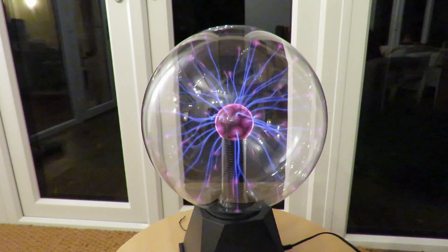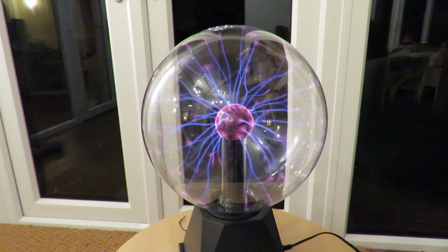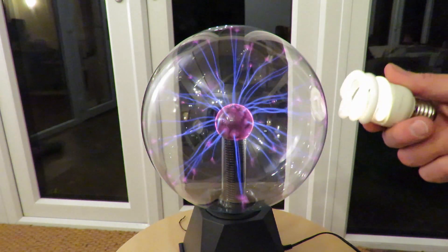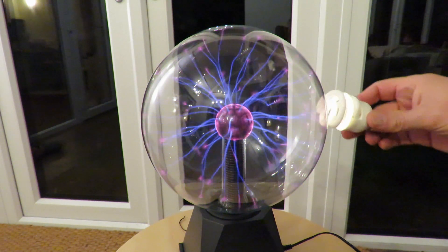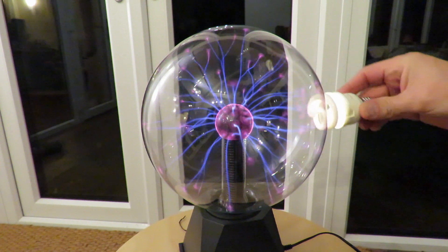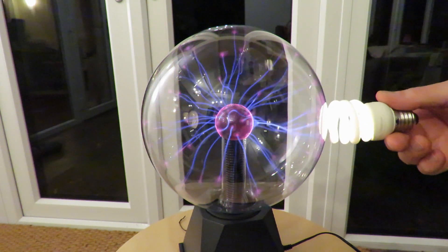If we take that off again. Clive was lighting light bulbs with it. These CFLs, Compact Fluorescent Lights.